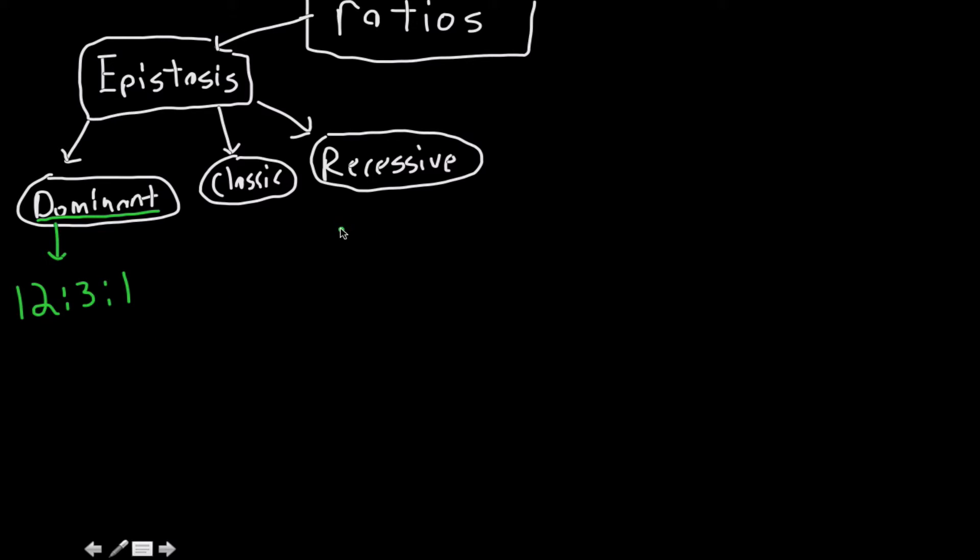For recessive epistasis, the ratio that we see is a 9 to 7 ratio.